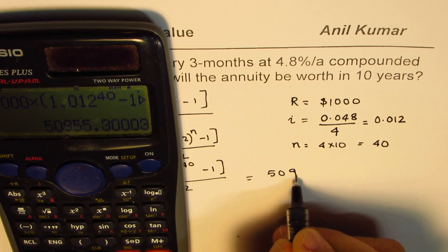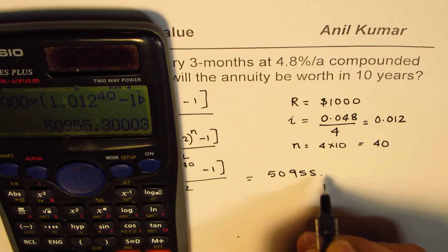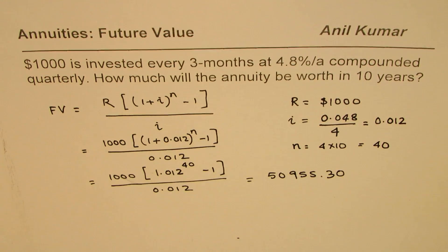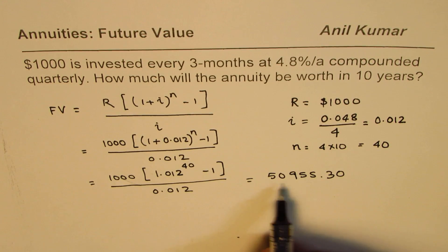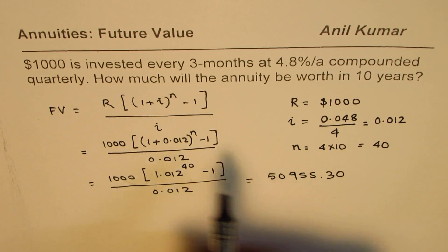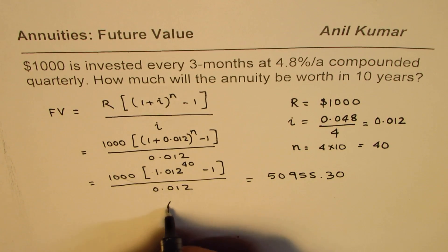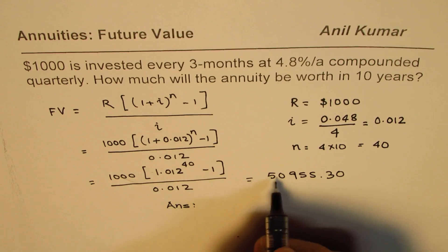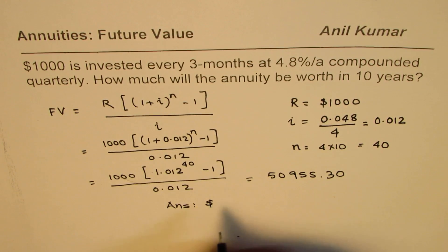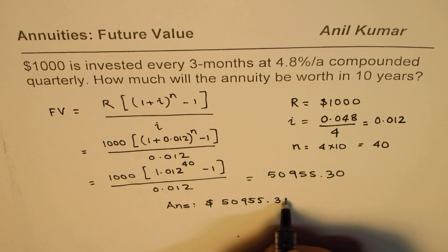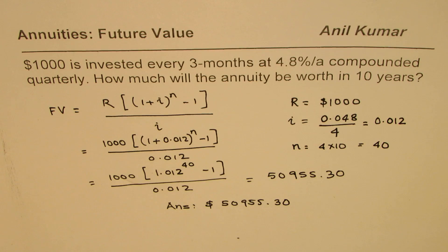We have our amount which is equal to $50,955.30 rounded to two decimal places. That's the amount which is going to be the future value. How much will the annuity be worth in 10 years? Our answer is in 10 years it will be worth $50,955.30.